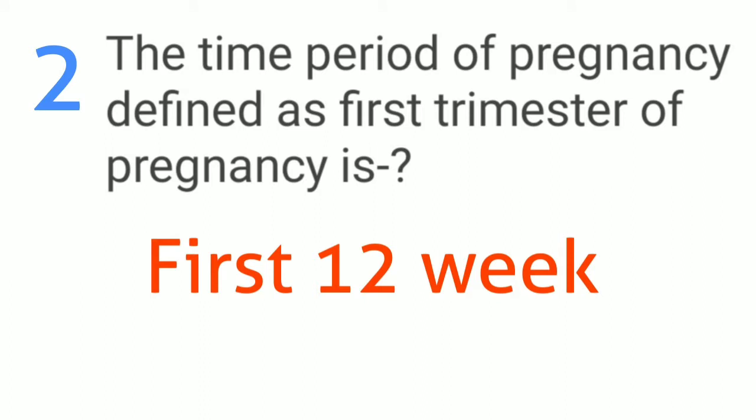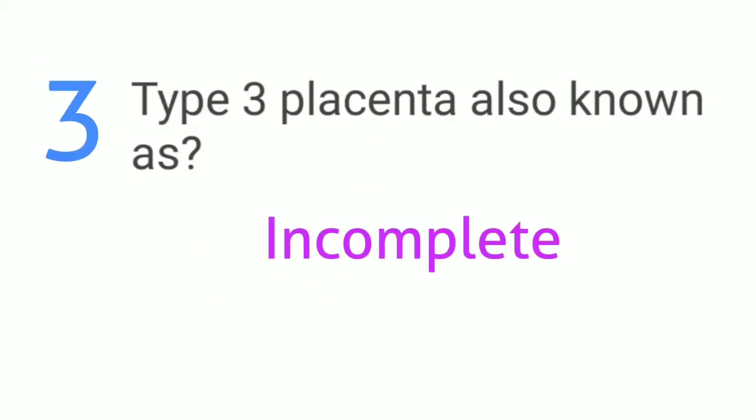The time period of pregnancy defined as the first trimester of pregnancy is the first 12 weeks. Type 3 placenta is also known as incomplete placenta.